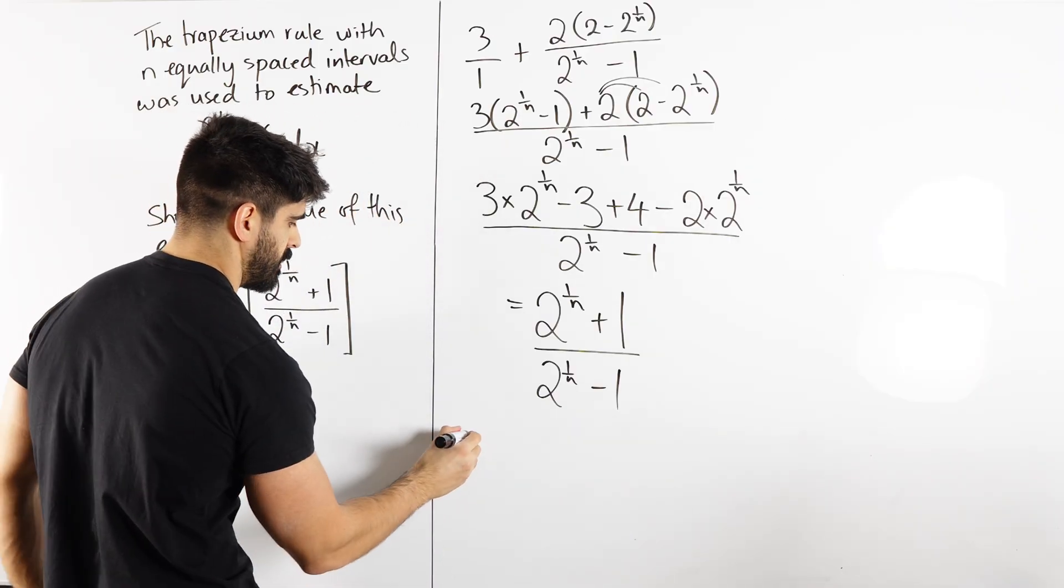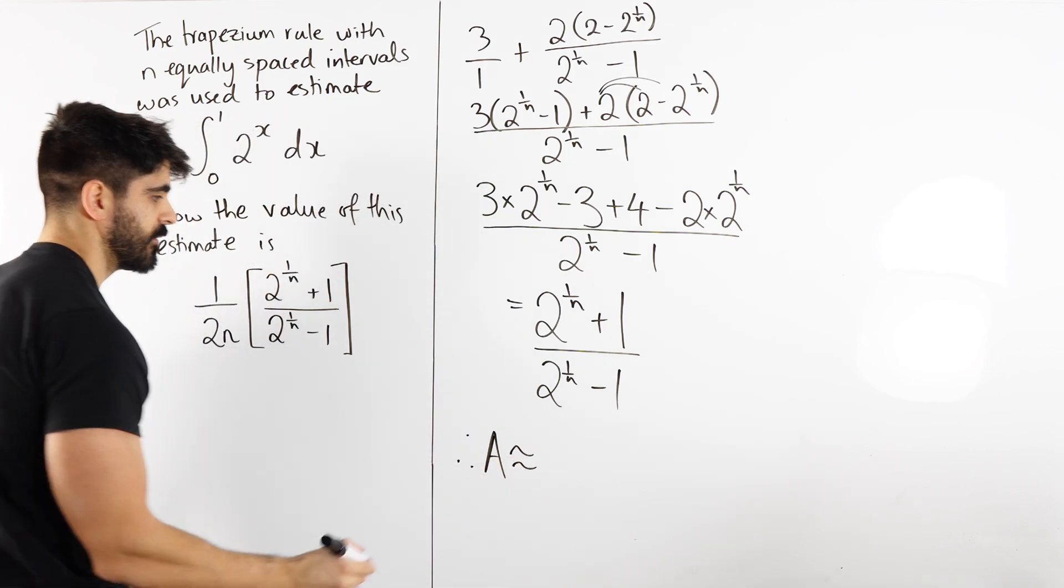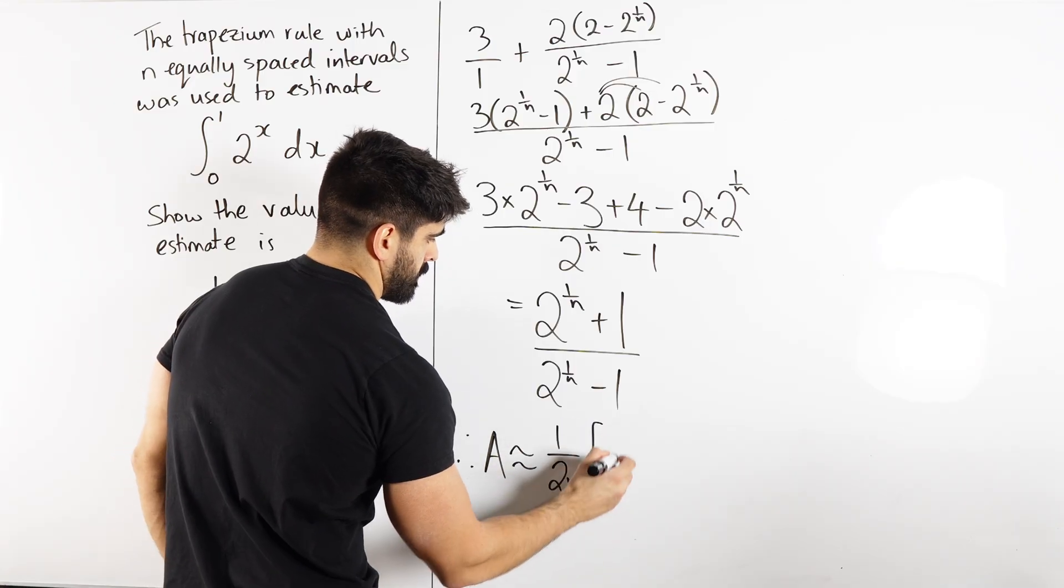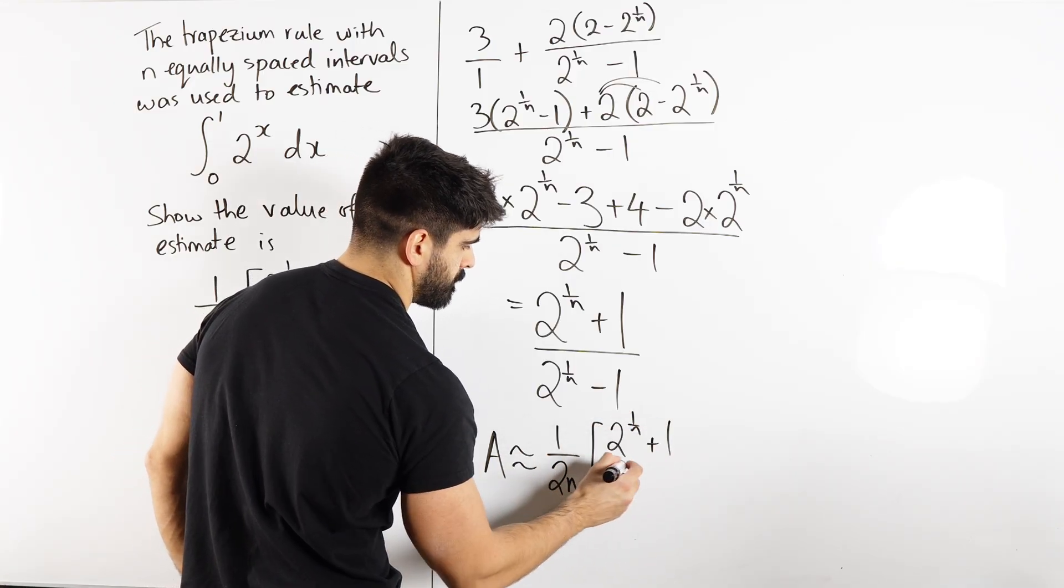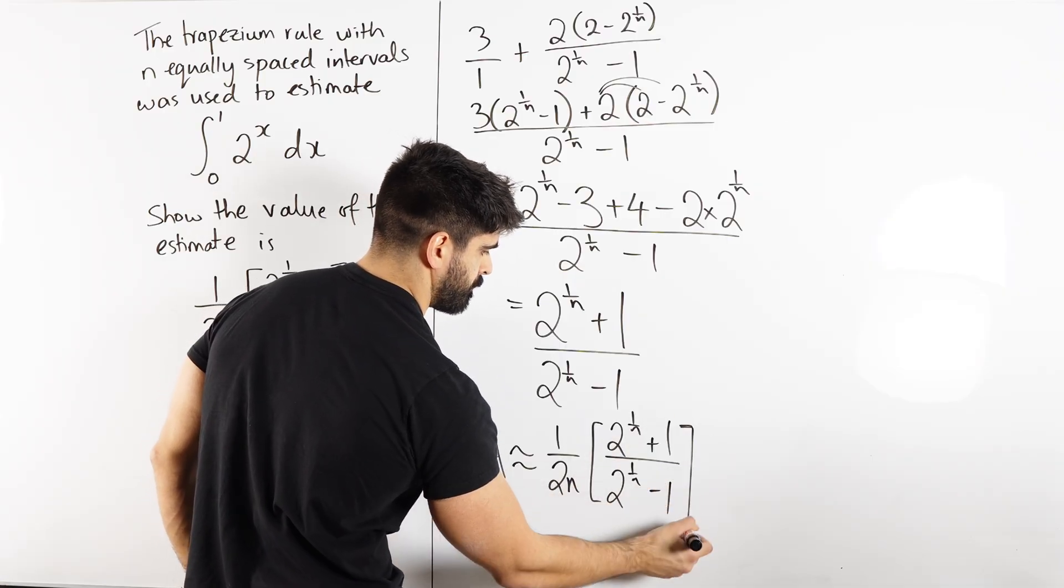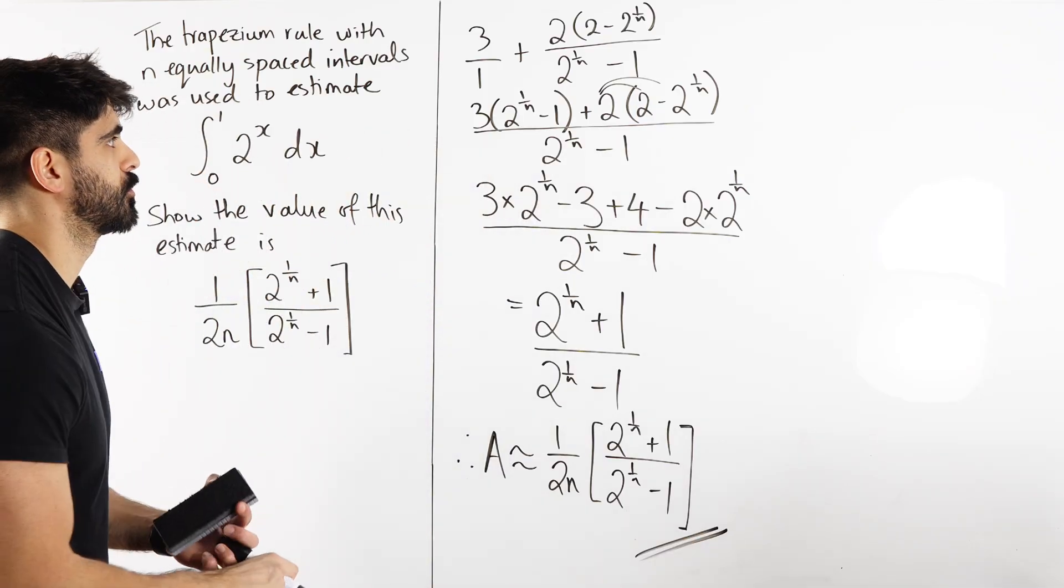Therefore, my area is approximately, remember we had the 1 over 2n, 2 to the power of 1 over n plus 1 all over 2 to the power of 1 over n minus 1. And that is proof.